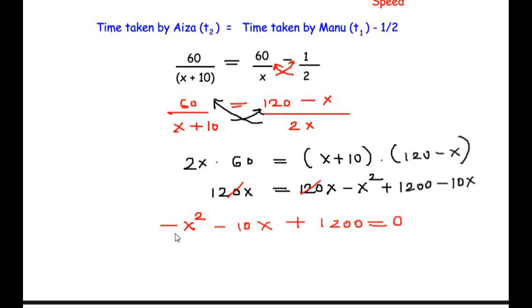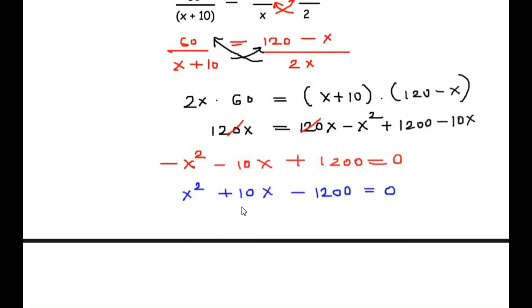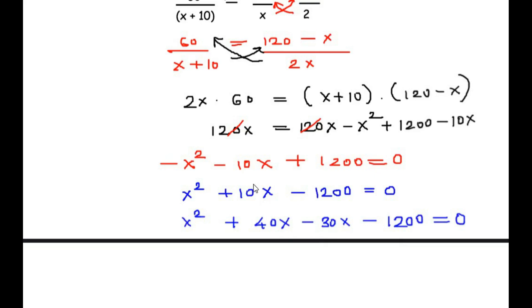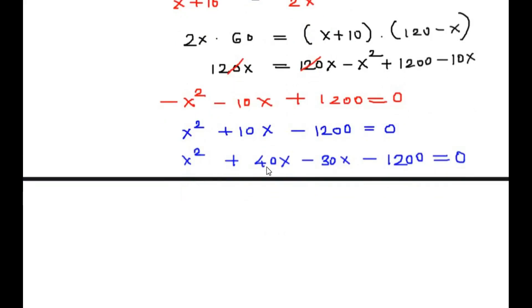Changing the signs of each term: minus x squared becomes plus x squared, minus 10x becomes plus 10x, and plus 1200 becomes minus 1200 equals 0, giving x squared plus 10x minus 1200 equals 0. To factorize this using the splitting the middle term method, the factors of 1200 that work are 40 and 30. So we split 10x as x squared plus 40x minus 30x minus 1200 equals 0.